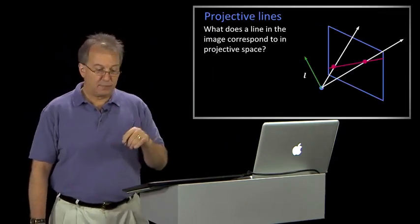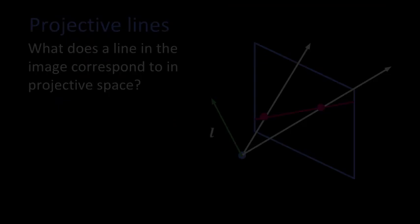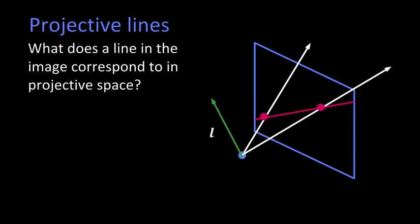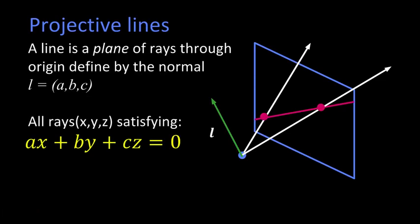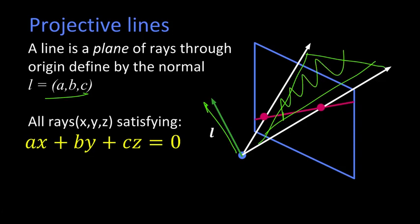To understand this perpendicular relationship, let's look at the projective space. What does a line in the image correspond to in projective space? A line really is defined by this plane of rays that's intersecting the image plane, and that plane is defined, like all planes are, by a normal. This is that same normal (a, b, c). All the rays that are perpendicular to that normal form the line, because the line is really just a plane in this projective space intersecting the image plane. Cool, right? It gets better.